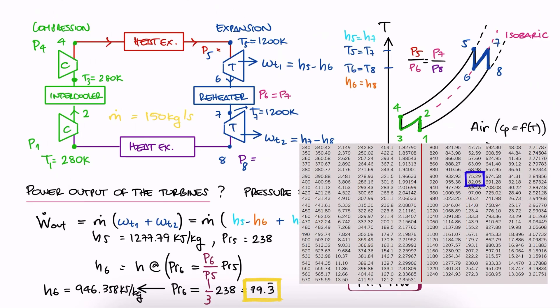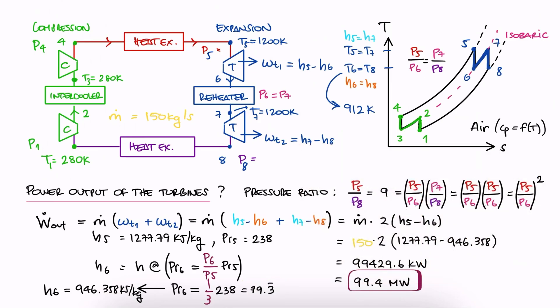Notice that when interpolating, we could also find the temperature at the exit of the turbines. It's not asked in this problem, but it will help us define the cycle better.